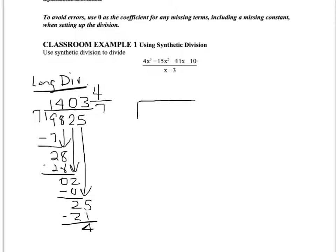The polynomial is 4x³ minus 15x² plus 11x minus 10. The first term is to the third power, the second to the second power, the third to the first, and the constant is x to the zero power. It's in descending order and there are no missing terms — no missing x² or x term. My denominator, x minus 3, is also in descending order, making it my divisor.